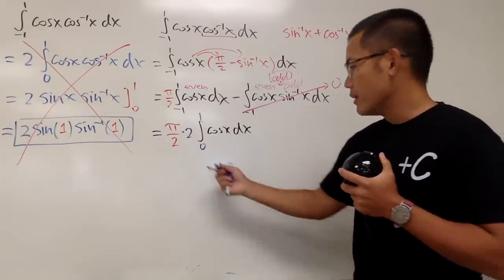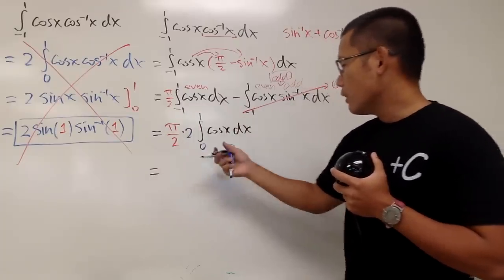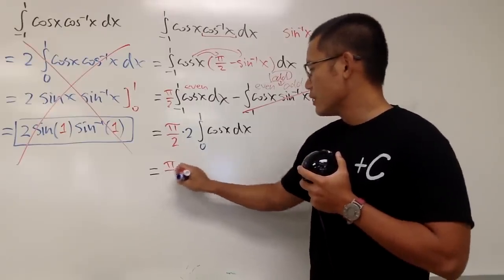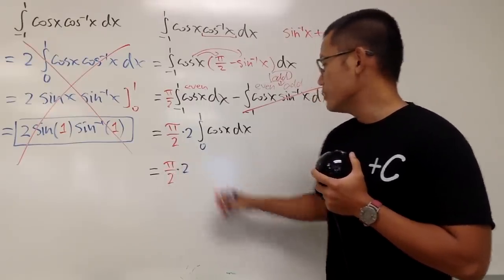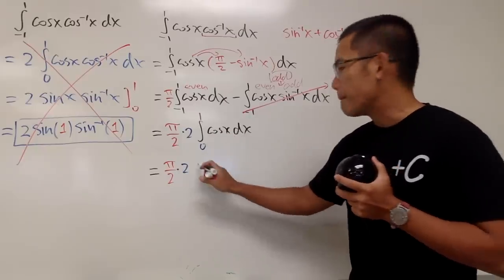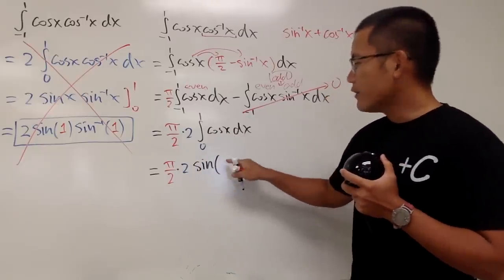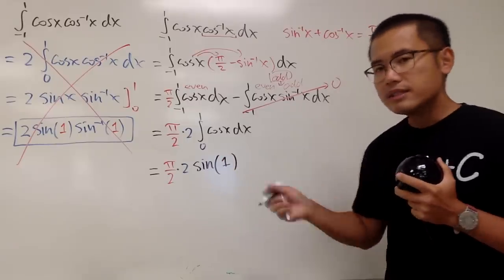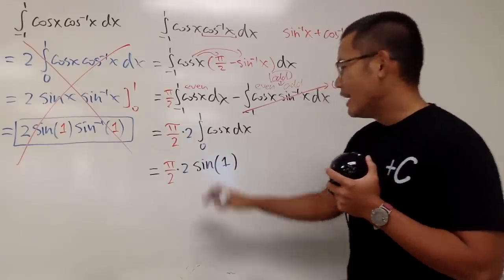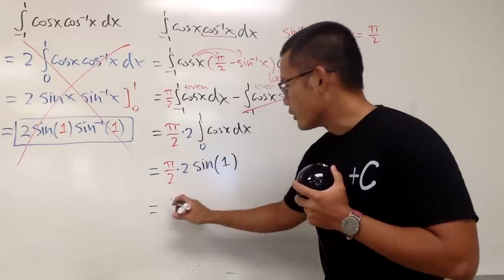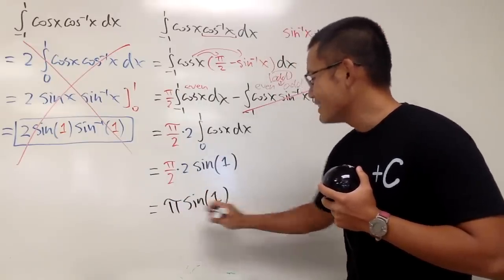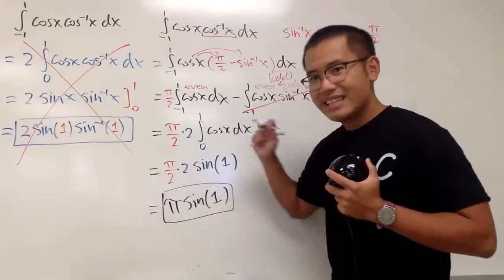And now we can integrate, no problem on that. Well, of course, let me just write down the π over 2, times 2, and when we integrate cos, we get positive sine, and, of course, we have to plug in 1 and plug in 0, so let me just plug in 1 right here, because when we plug in 0, sin is just 0, so it doesn't matter. And in the end, of course, we can just cancel the 2s, so we get π times sine of 1, and that's it.